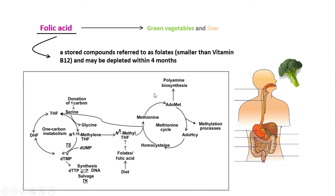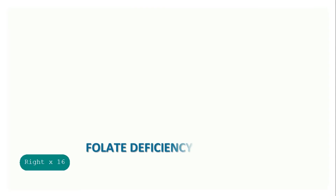Here, in methylcobalamin, in order for it to participate in DNA synthesis, it has to get rid of that methyl group. So it gives it to homocysteine. Homocysteine plus methyl equals methionine. This process can be done by the help of the enzyme homocysteine synthase.